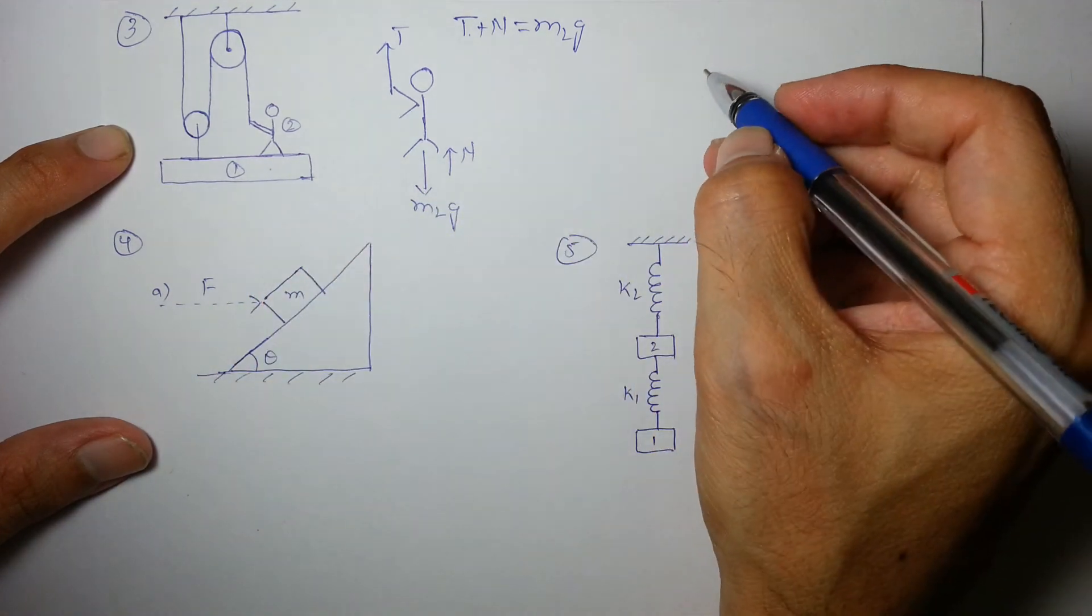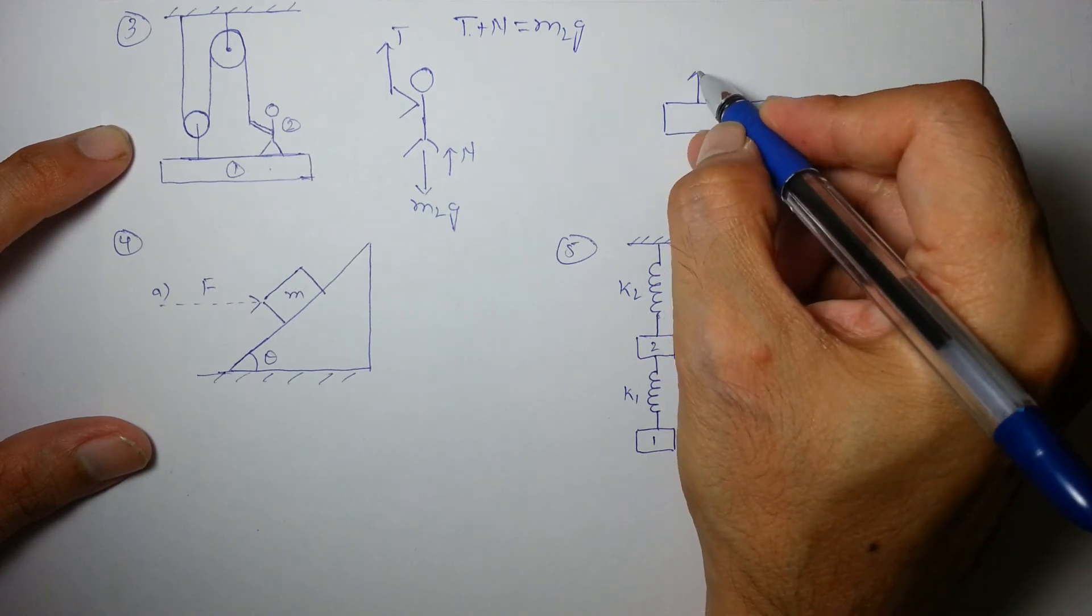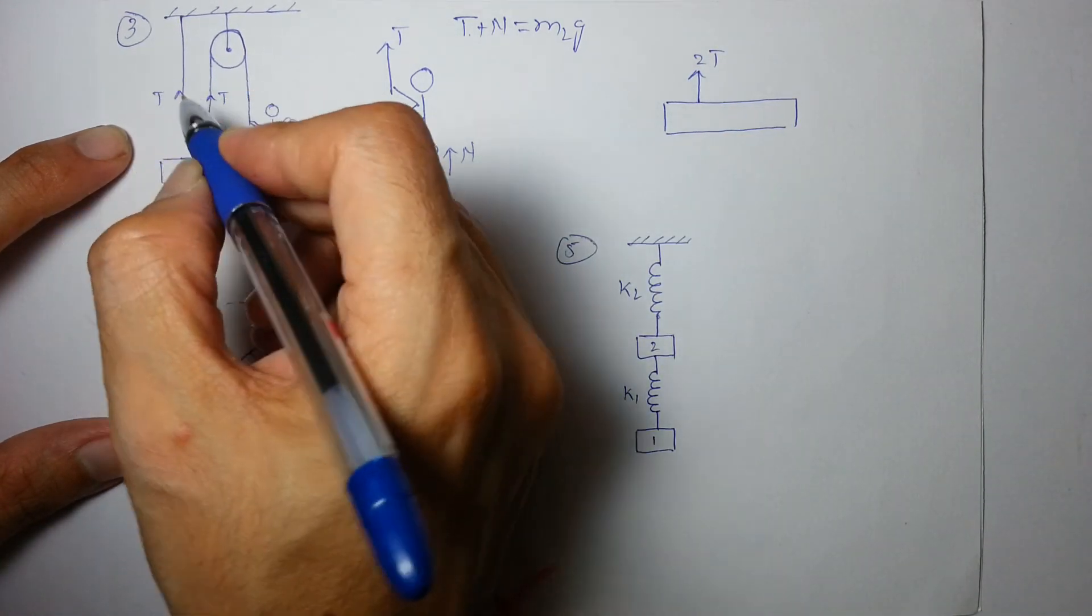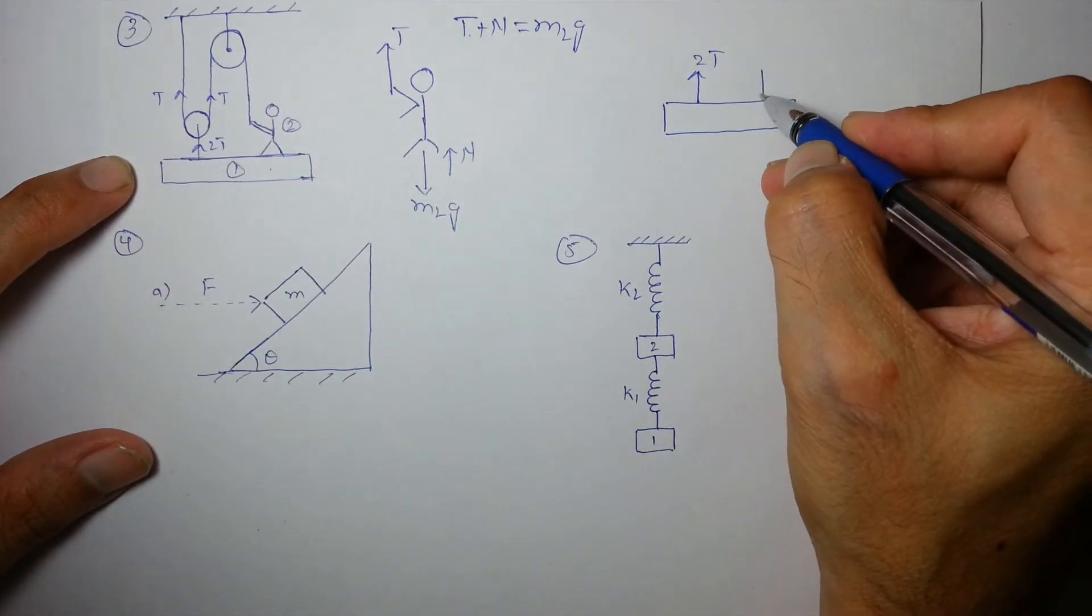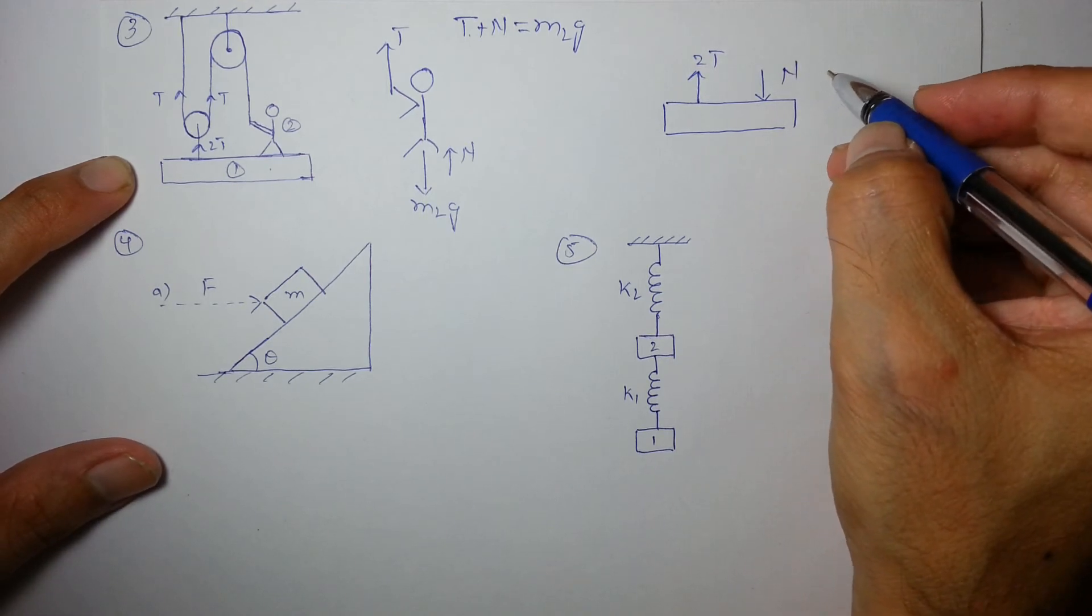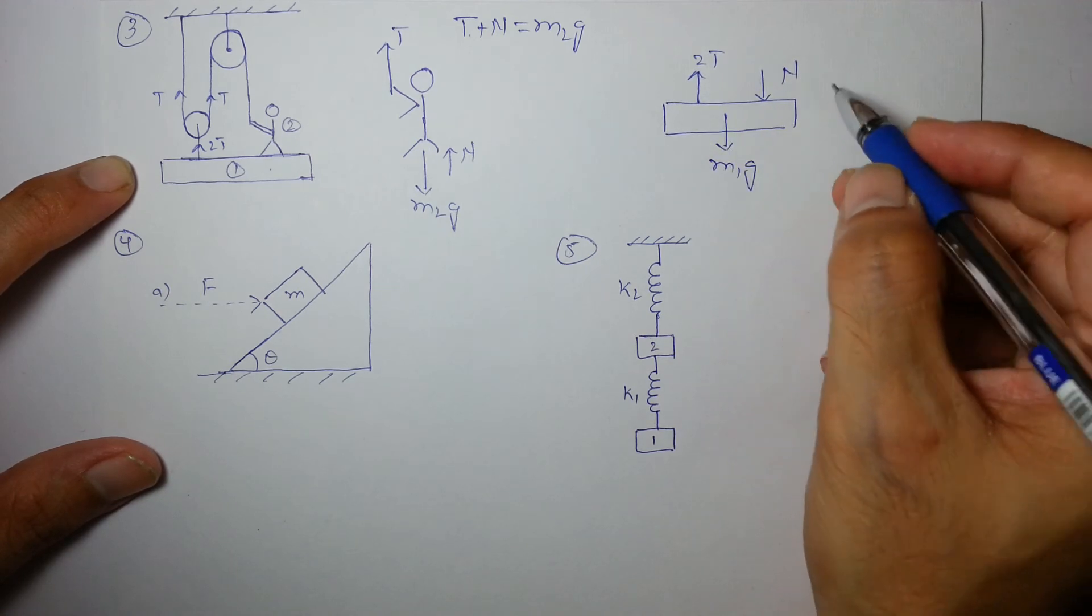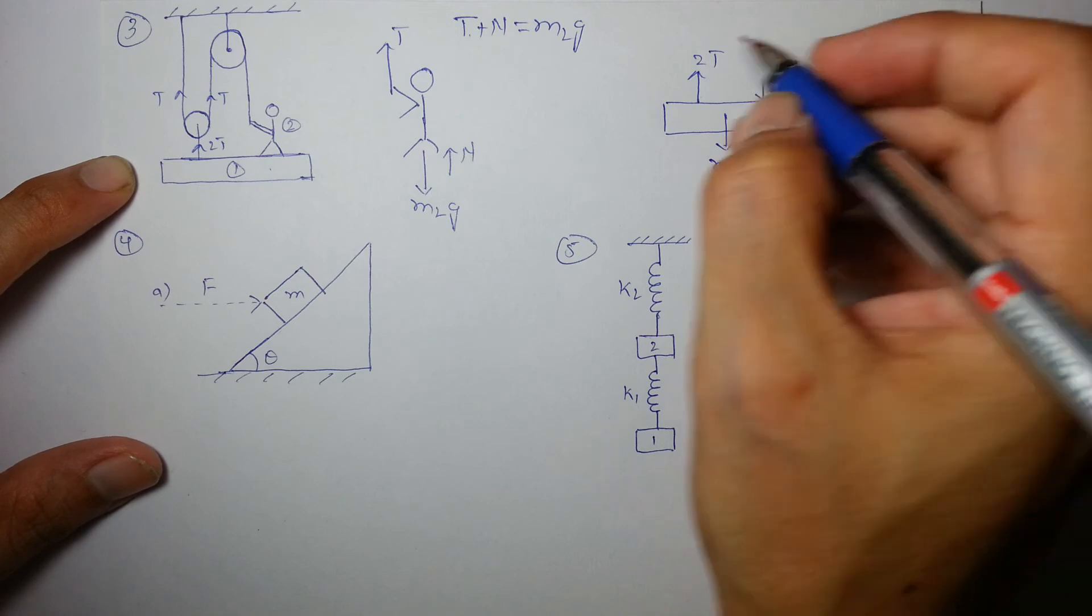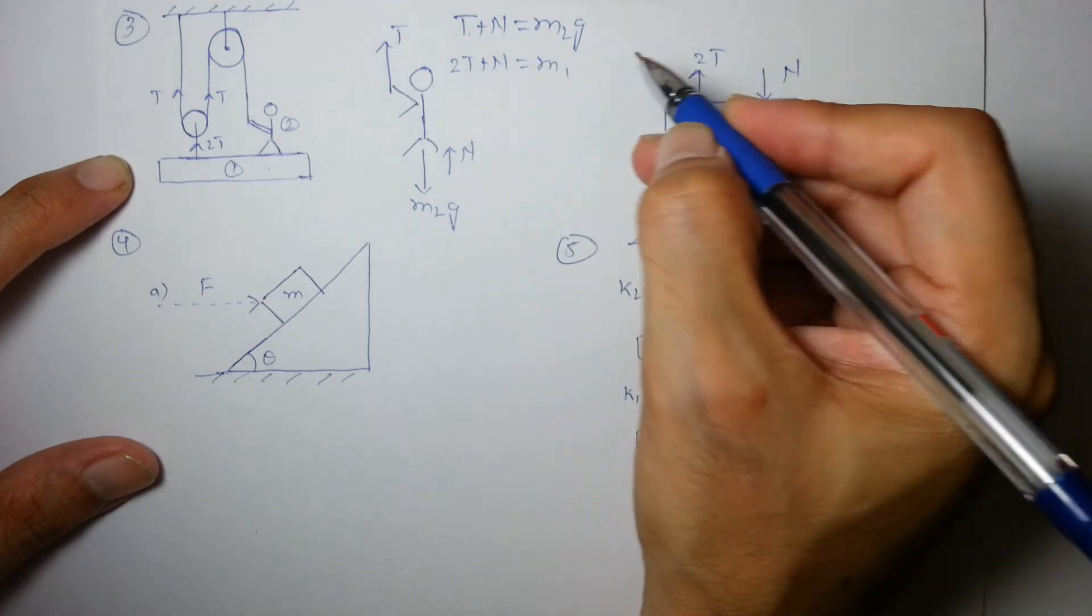What about this? Plank. Plank experiences a force or a tension 2t because this is T and this is T. So, this must be 2t on the plank. And it will experience another force from the man's feet which is normal and another which is weight of its own. So, under these three forces, it will be at equilibrium. So, the next force or the next equation is 2t plus n is nothing but m1g.